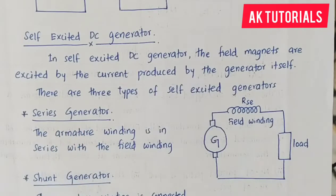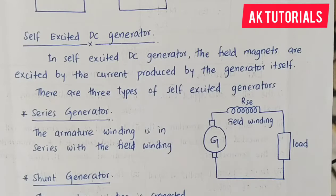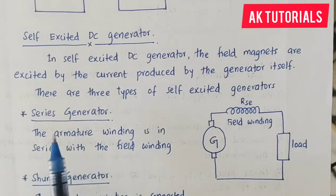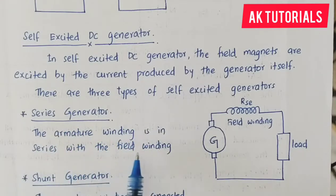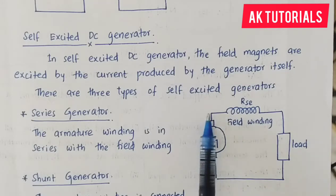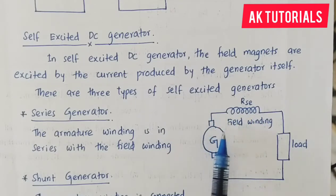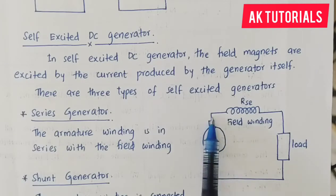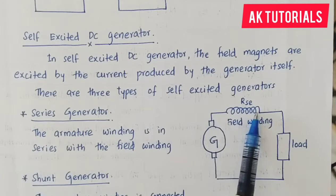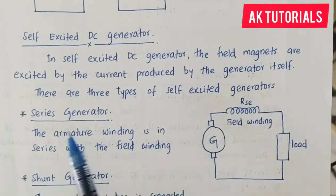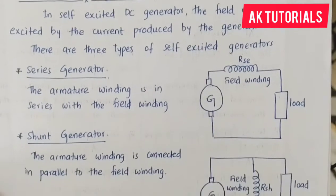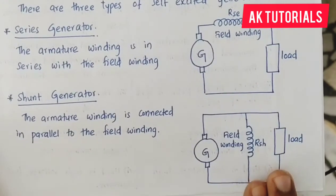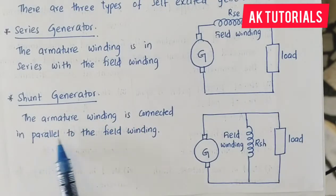The first type is the series generator. The generator has two windings: one armature winding and two field winding. In a series generator, the armature winding is connected in series with the field winding. The next type is the shunt generator, where the armature winding is connected in parallel to the field winding.